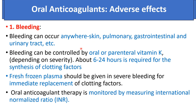Adverse drug reactions of oral anticoagulants: the most common is bleeding, which can occur anywhere in the body — skin, pulmonary, gastrointestinal, and urinary tract. Bleeding can be controlled by oral or parenteral vitamin K1. About 6 to 24 hours is required for synthesis of clotting factors after injection of vitamin K1. In emergency conditions, fresh frozen plasma should be given for immediate replacement of clotting factors.